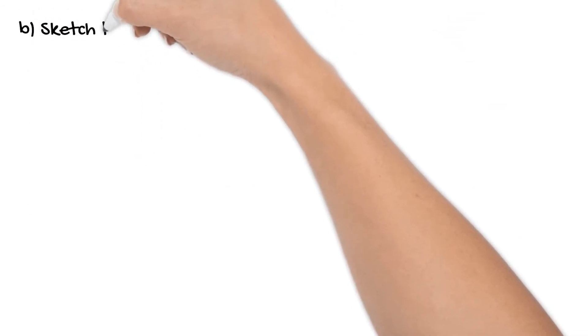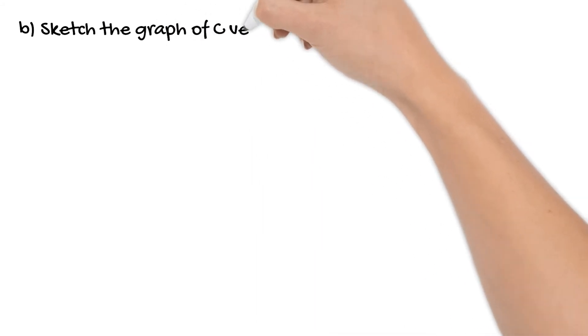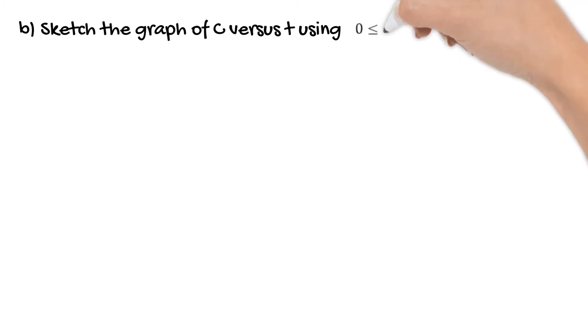For the next part of our problem, we need to sketch the graph of C versus T using values of T between 0 and 10 inclusive. We know from our rule that the C-intercept is 20. That means when the time is 0, so no hours have been used of the internet, it's going to cost you $20 anyway.